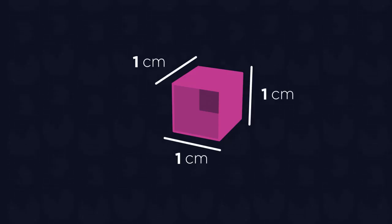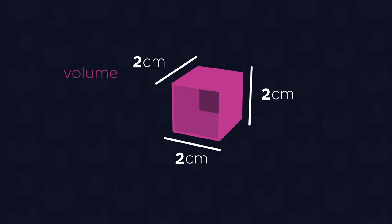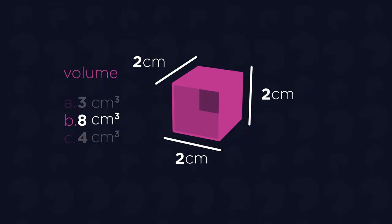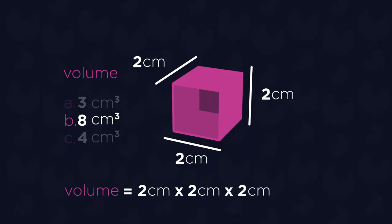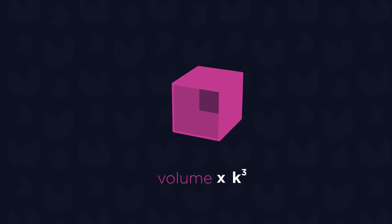We can also add another dimension. Imagine that instead of a 2D square, we have a cube with each edge measuring 1cm. The volume of this shape is 1cm cubed. Let's say we enlarge each edge with a scale factor of 2. If we enlarge each edge of our cube by a scale factor of 2, our new volume will be 2cm times 2cm times 2cm, or 8cm cubed. The rule of thumb here is that when the lengths of a shape are multiplied by a constant scale factor, represented by K, then the volume will be multiplied by K cubed.